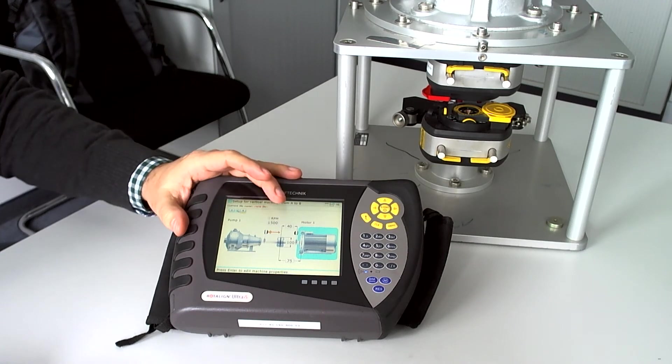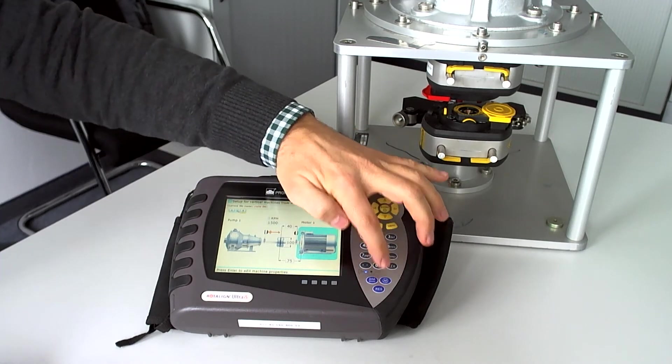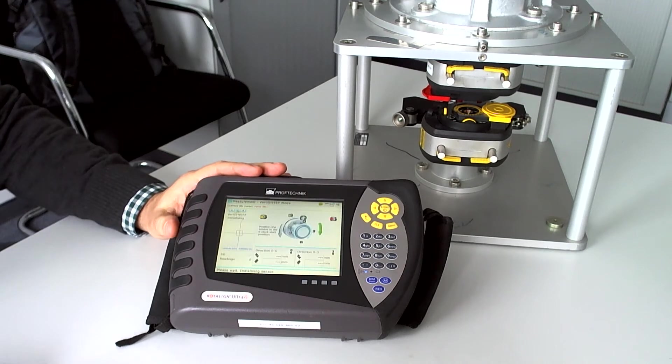Once they have been inputted, I am in condition to go to the measurement screen. In the measurement screen, it is asked if I want to rotate the shaft over three o'clock or alternatively over nine o'clock.